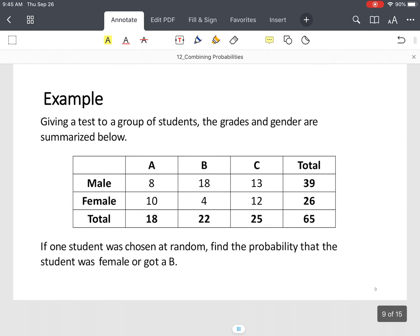All right, so now, what if we have a table? They gave us a table of test scores for a group of students, male and female students. And you've got A's, B's, and C's. Now we need to find the probability that a student was female or the student got a B.